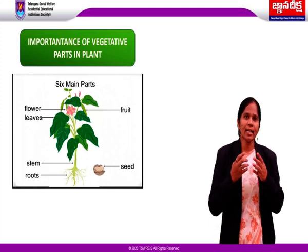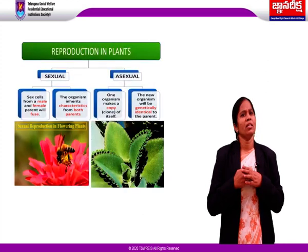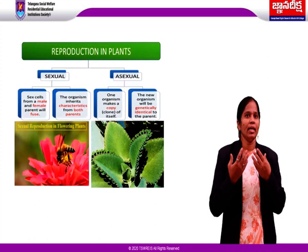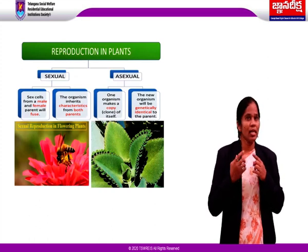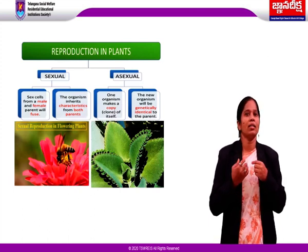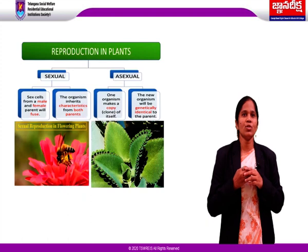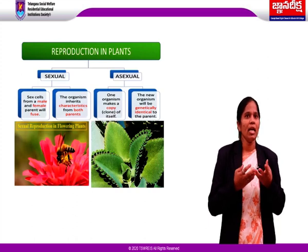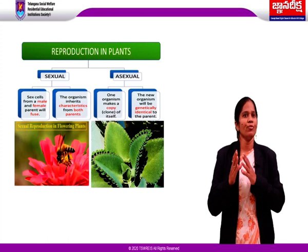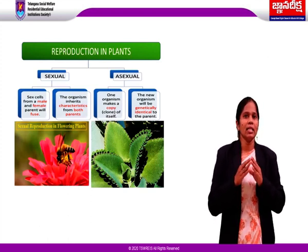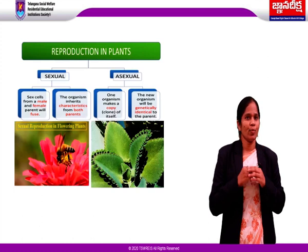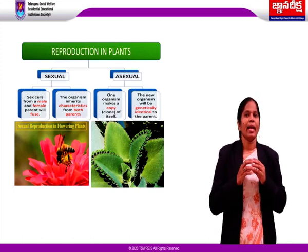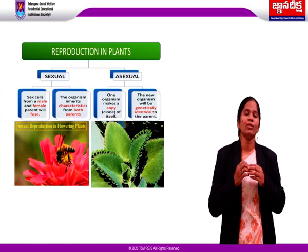Children, do you know what is meant by reproduction? Reproduction means giving birth to new young ones to continue their next generation. Reproduction is of two types: sexual reproduction and asexual reproduction. In sexual reproduction, sex cells are formed by the male and female parents; these male and female gametes fuse. The organism inherits characteristics from both parents. In asexual reproduction, a single parent can make a copy of itself, and the new plant will be genetically identical to the parent.